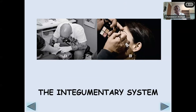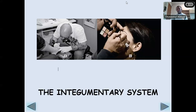We'll be looking at the integumentary system this morning. When people think of the integumentary system, they usually think of the skin alone. The skin by itself is also called integument, but not the integumentary system. Any system includes more than one organ, and the skin is the largest organ in the body — it is an organ, not a system.